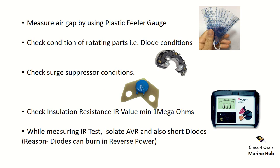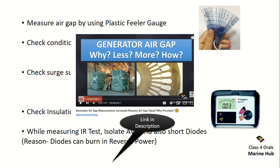Measure the air gap using a plastic filler gauge — you can see the plastic filler gauge on the right. Measuring the air gap is a very important question asked in MMD orals. I have made another video on the generator air gap explaining what happens if the gap is less or more, how to measure it, and why we use a plastic rather than a metallic filler gauge. The link is in the description.